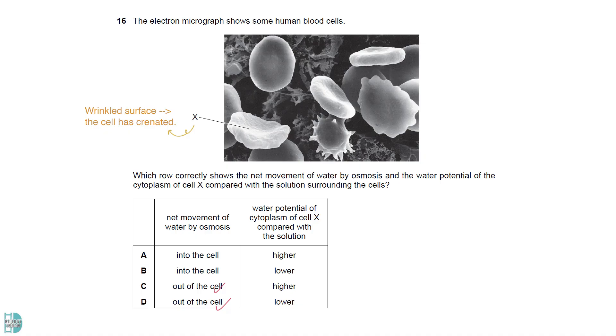The wrinkled surface of cell X indicates that the cell has crenated. This means that there is a net movement of water by osmosis out of the cell. Water moves down the water potential gradient. So the cell cytoplasm has a higher water potential than the solution.